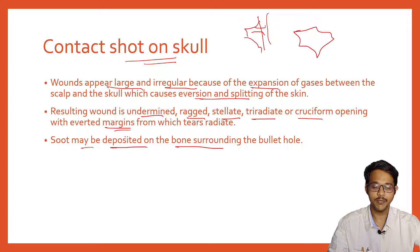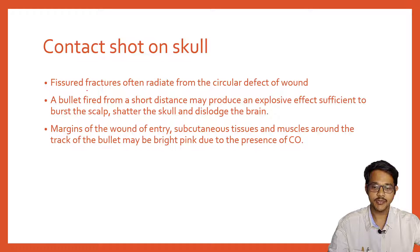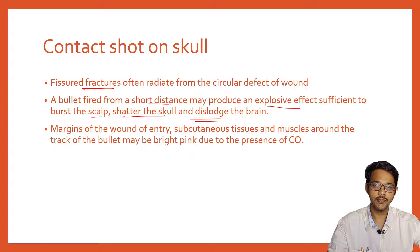Soot may be deposited on the bone surrounding the bullet hole. Fissure fractures of the skull radiate from the bullet wound. A bullet fired from short distance may produce an explosive effect sufficient to burst the scalp, shatter the skull, and dislodge the brain. The muscles and tissues around the track may be bright pink due to presence of carbon monoxide deposited inside the wound.